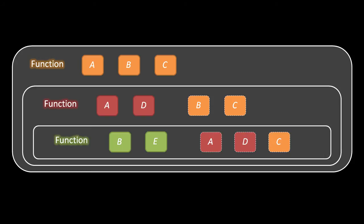The caveat is that some of these variable names conflict. Both the red and orange functions, for example, have a variable named a. The way this gets resolved is that the more local variables take precedence. So the red function only sees b and c of the orange function, but not its a. And the green function sees a and d of the red function, but only c of the orange function.